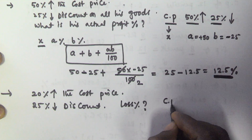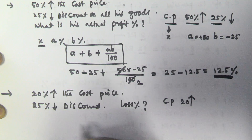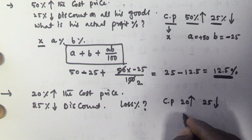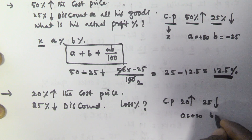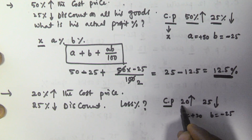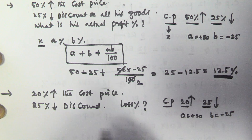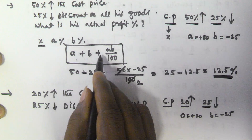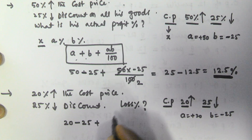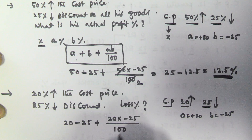Let us assume there is an initial cost price. On that he increased 20 percentage on all his goods, and after that he is providing 25 percentage discount. So a = +20 and b = −25. The overall percentage change in the cost price is given by a + b + (ab / 100), so: 20 + (−25) + (20 × −25 / 100).